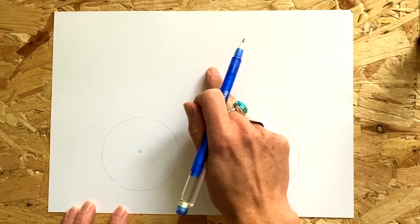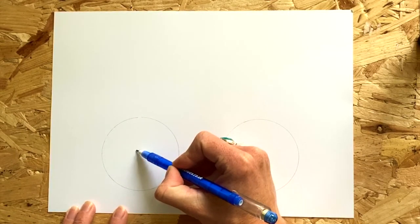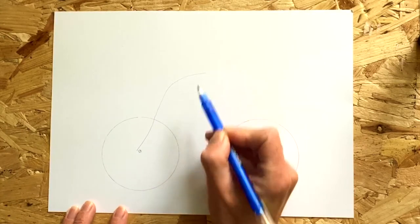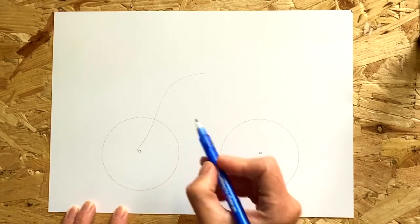Now we're going to start to draw the bicycle frame. We're going to start with the front of the bicycle up to the handlebars.